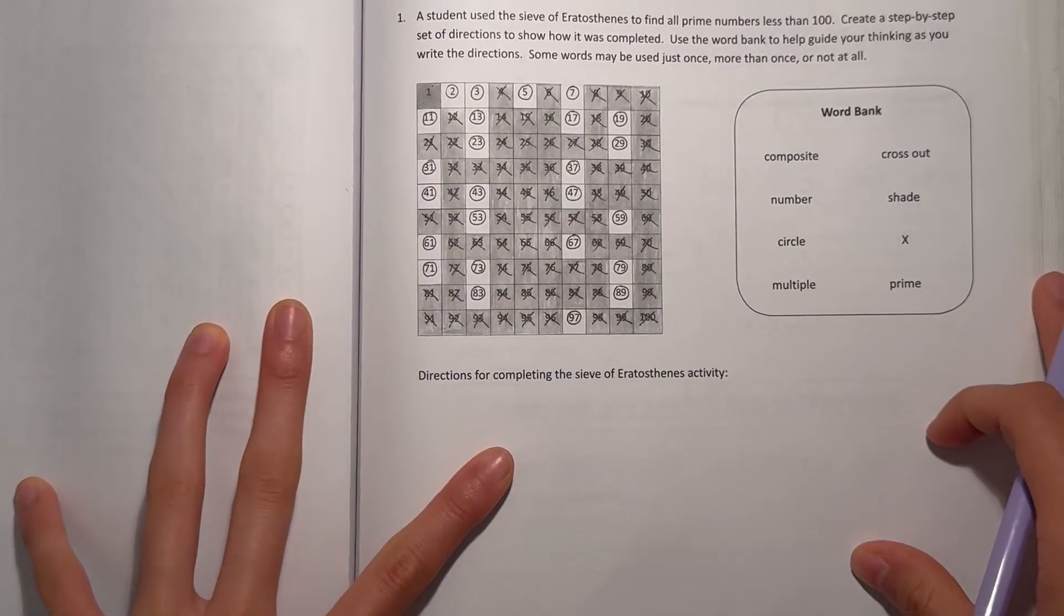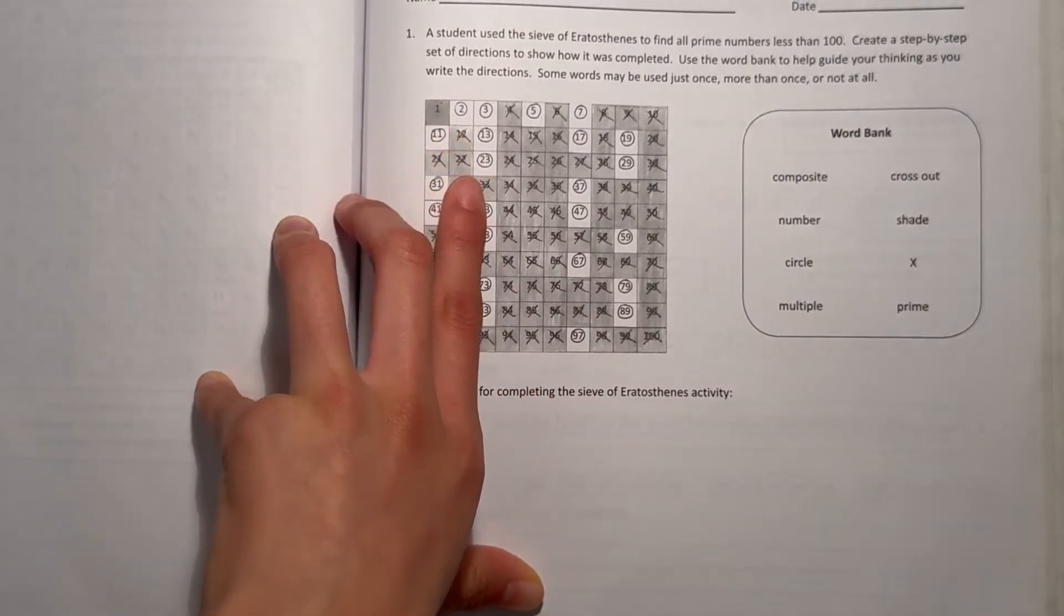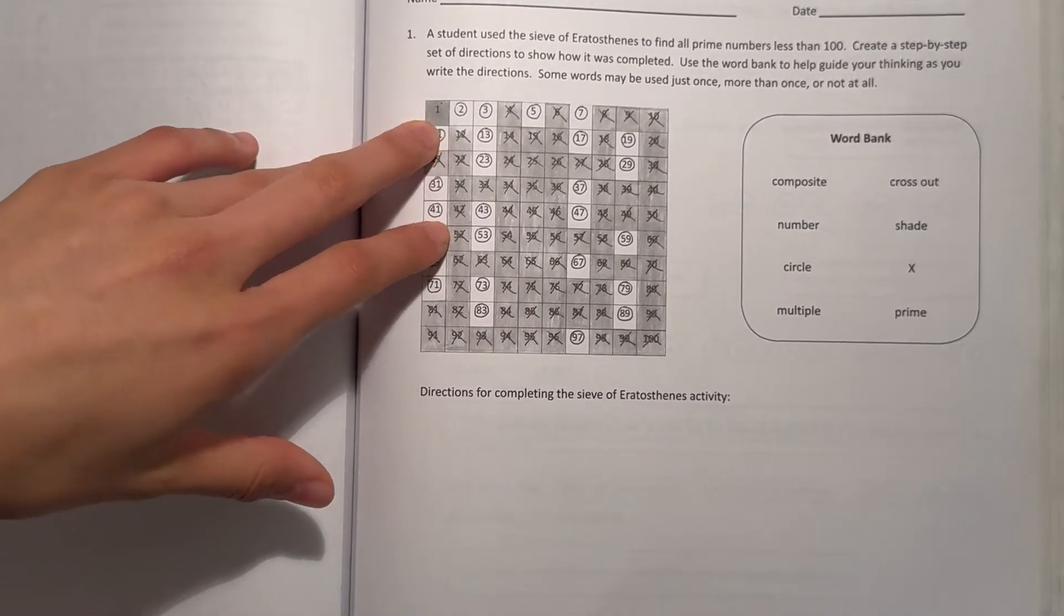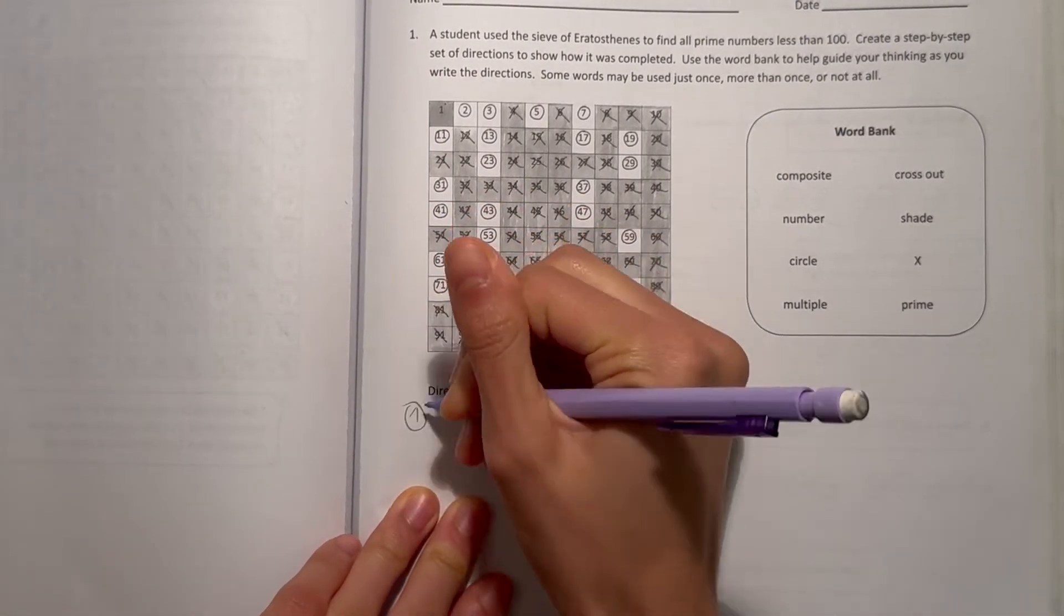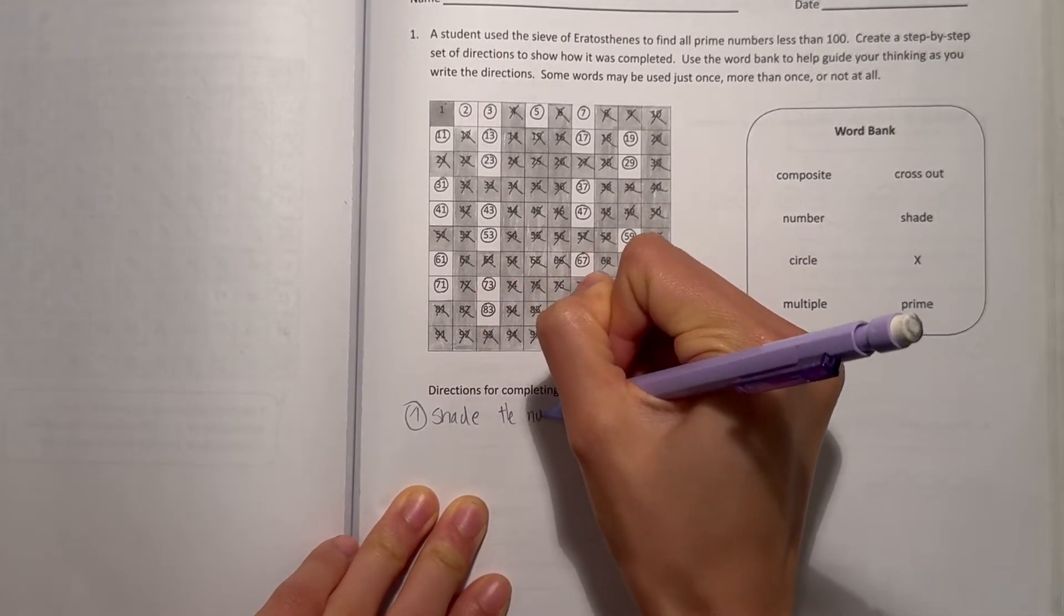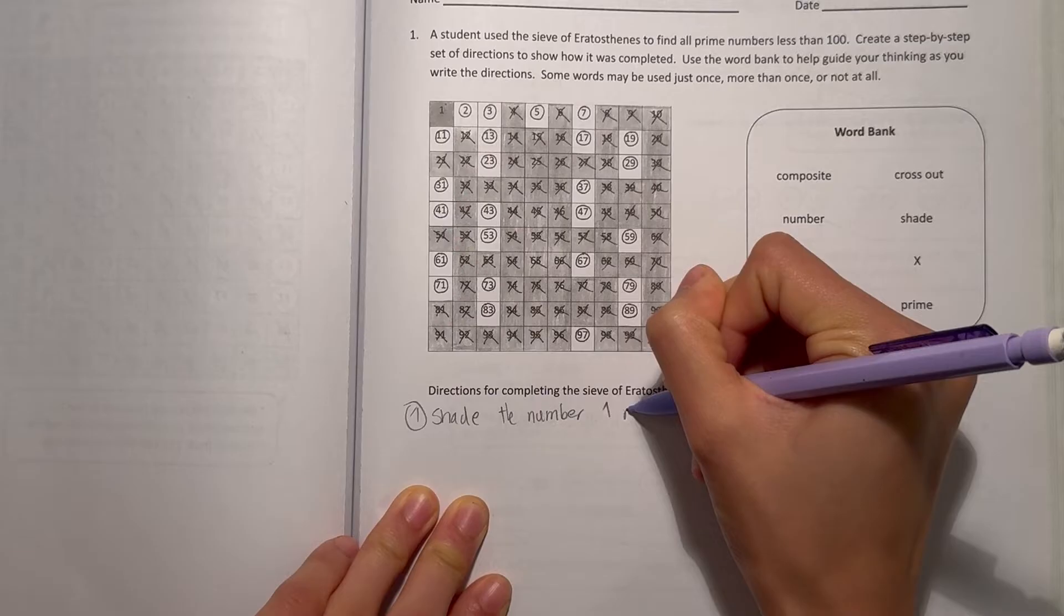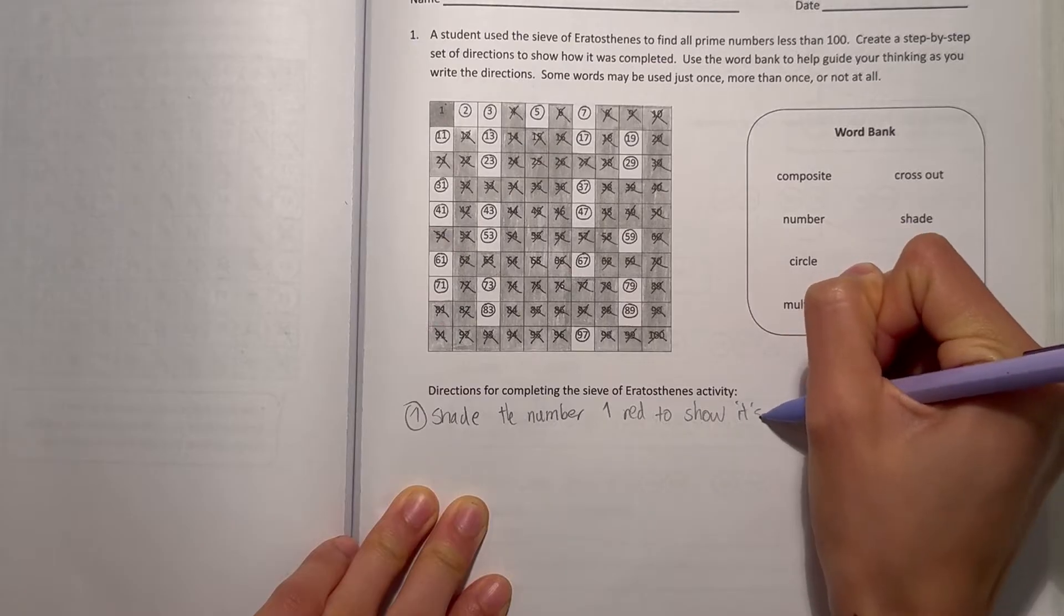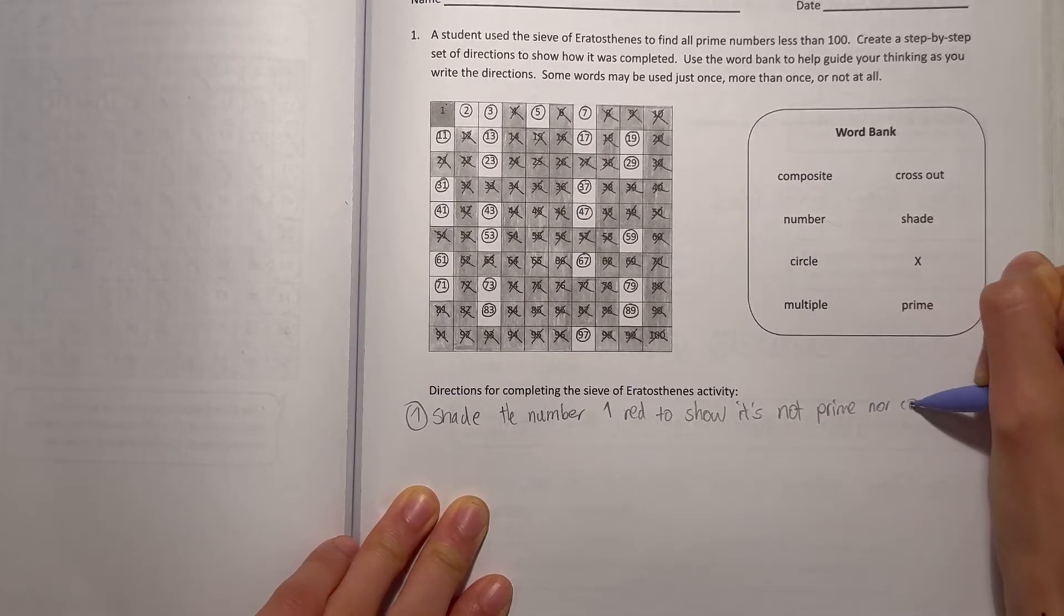So first thing, how to create this, we start with one and we make sure to shade out one. We'll shade one to another color to show that one is different because one is not a prime number nor a composite number. So step one would be to shade the number one like red or something to show it's not prime nor composite.